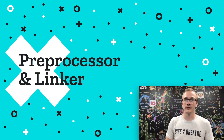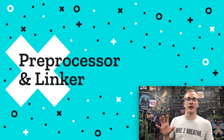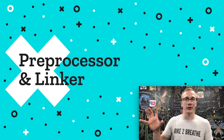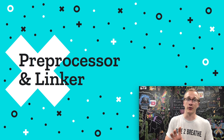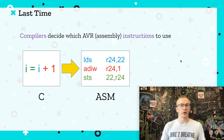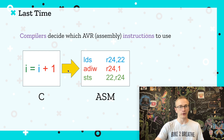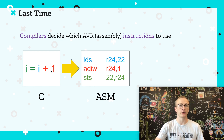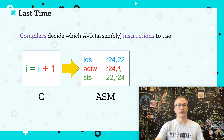Greetings and welcome. Today we're going to learn about how to use an external library in your code, and to do that you need to know how the preprocessor and linker work. As a quick recap, last time we talked about compilers — a compiler's goal is to take some C code and figure out which instructions to use, essentially converting it to assembly.